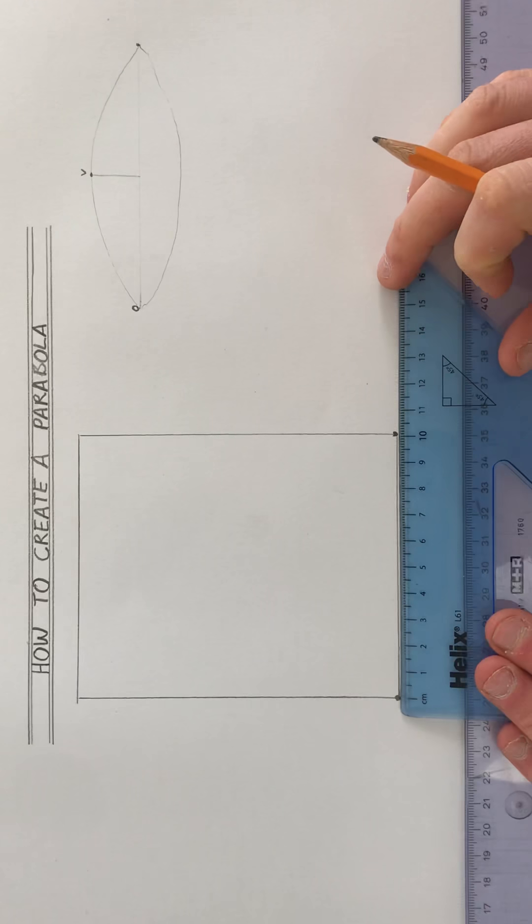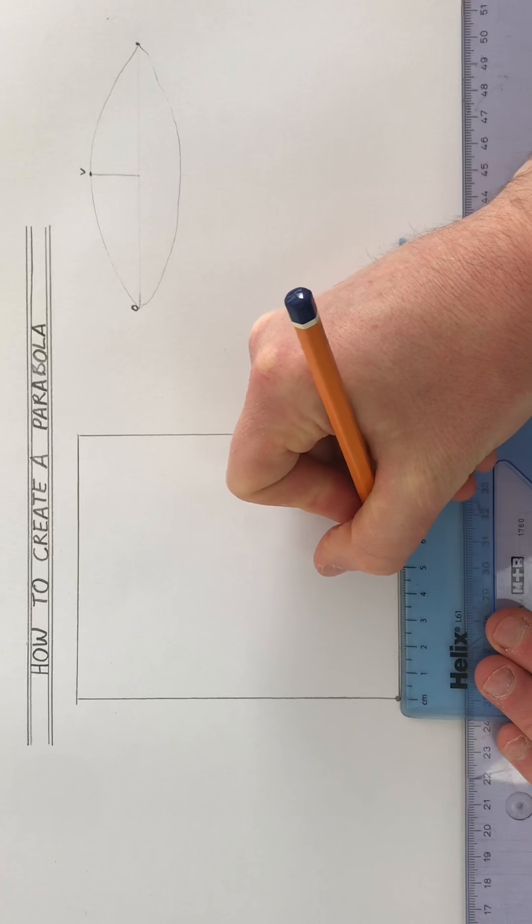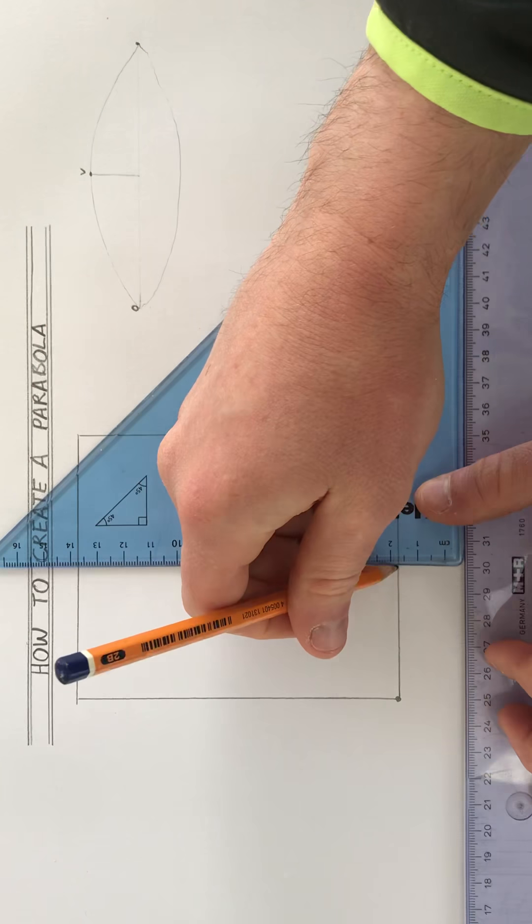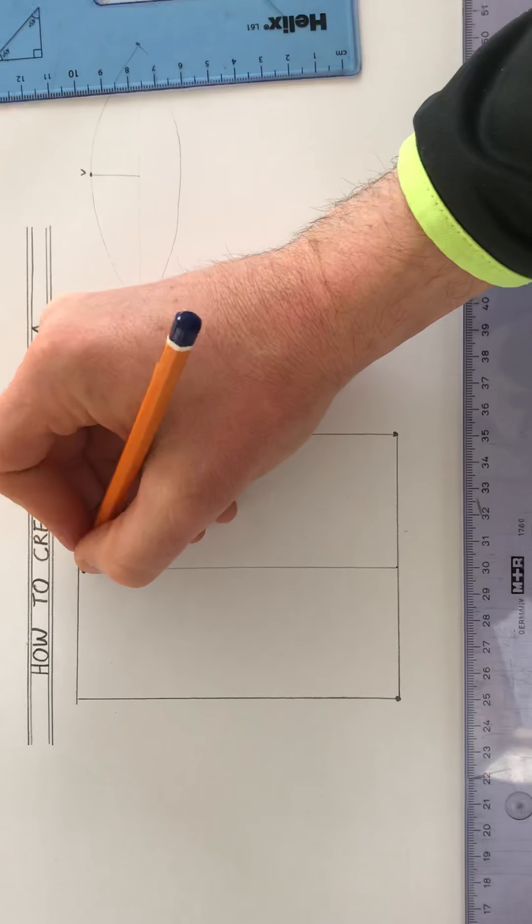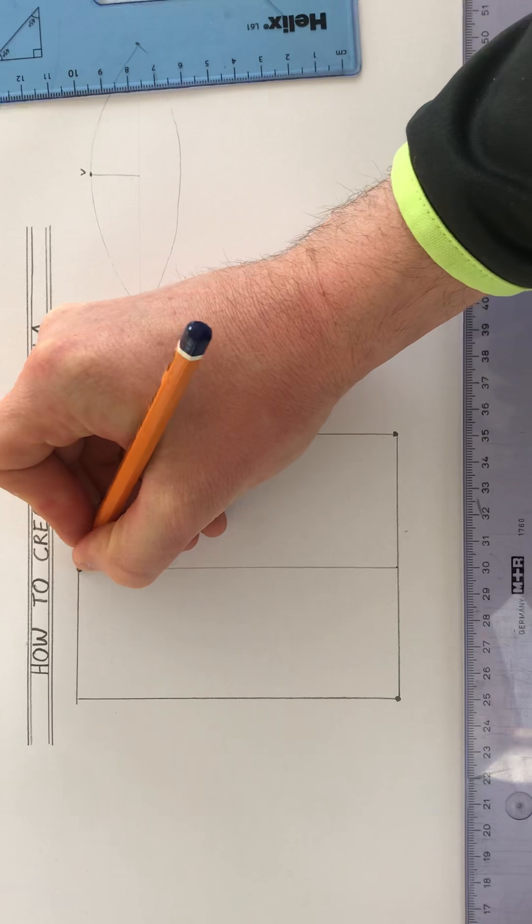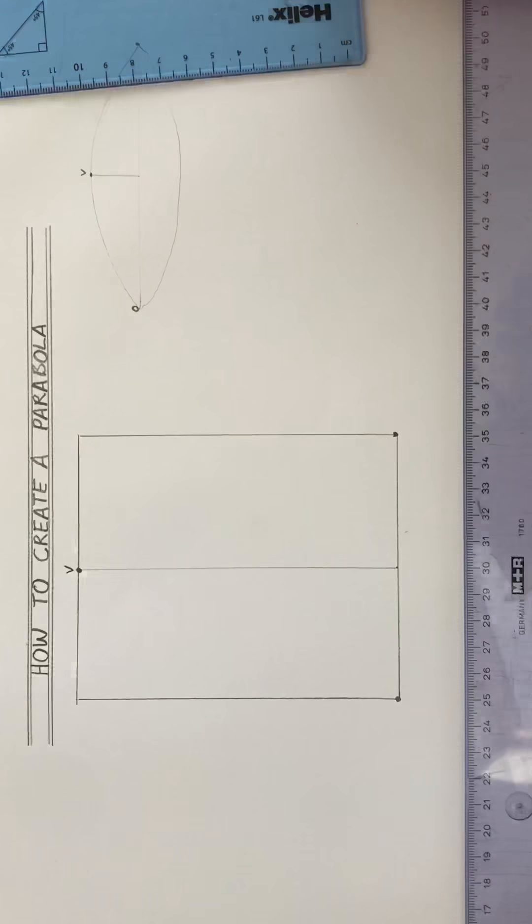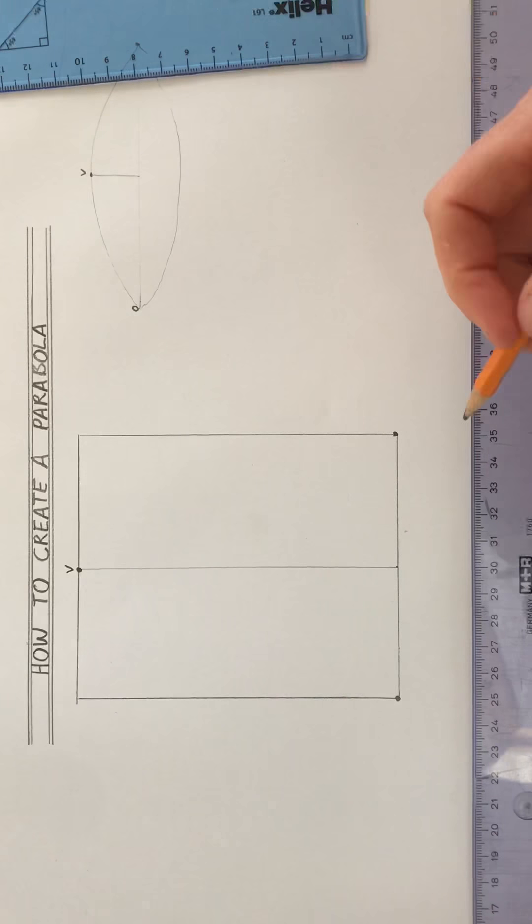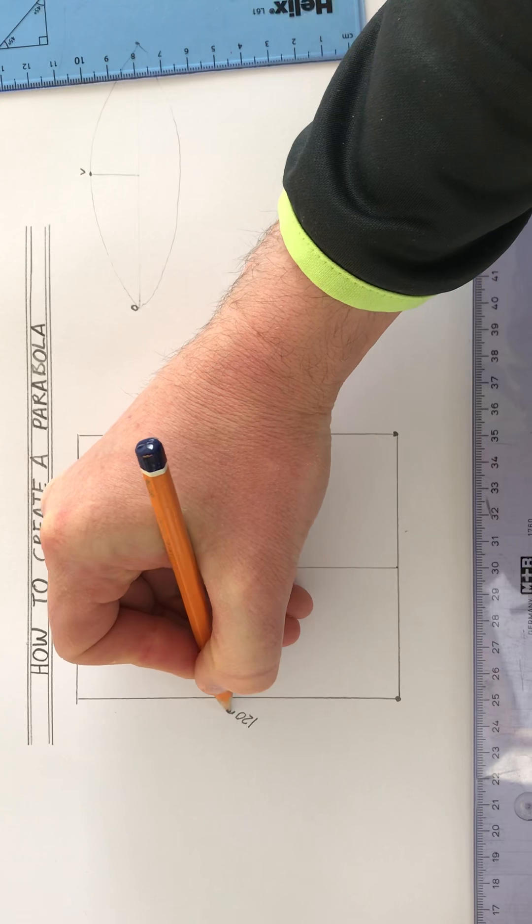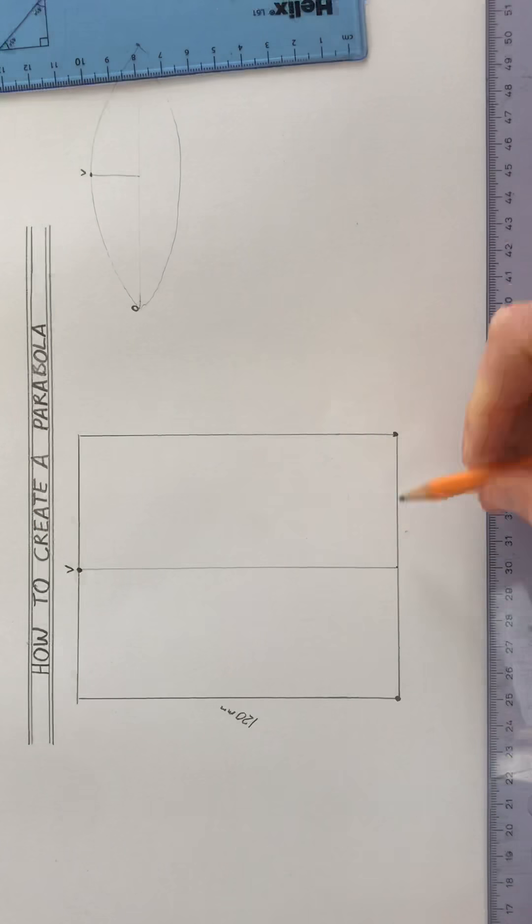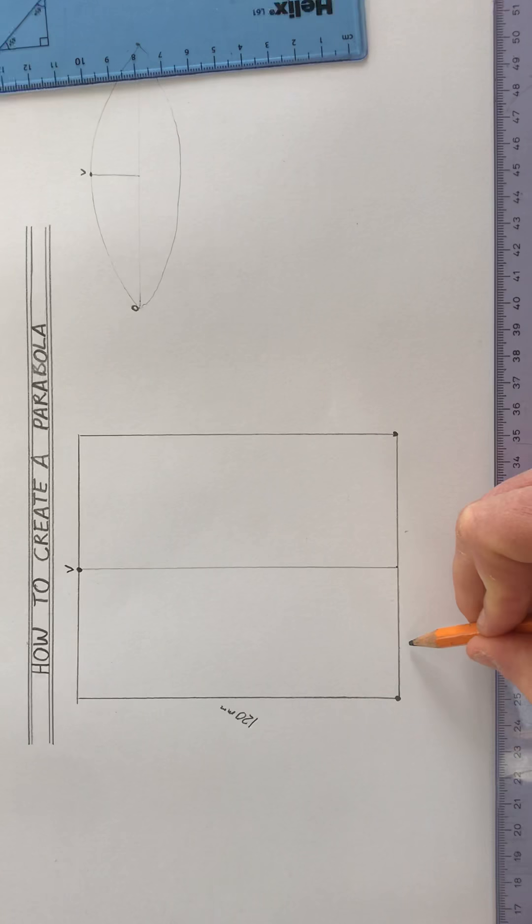So half of 10 centimeters is 5 centimeters and I'm going to draw a line straight up. So where's the vertex, where is it at its highest? It's at its highest there. We call that V for vertex. Now this height is 120 millimeters, this width is 100 in total, so half of it is 50 millimeters.